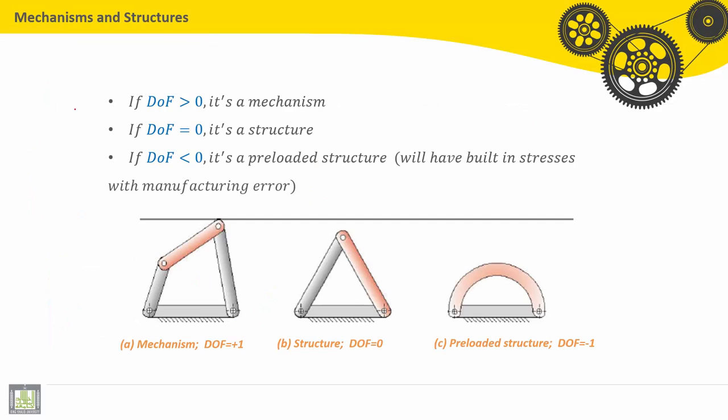If degree of freedom is positive, it is called a mechanism. If it is equal to zero, it is called a structure. If degree of freedom is negative, it's a preloaded structure that will have built-in stresses with manufacturing errors.